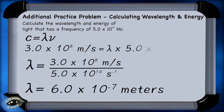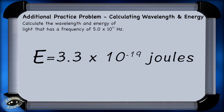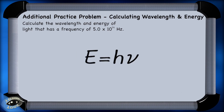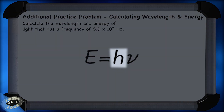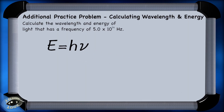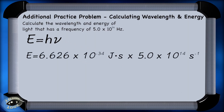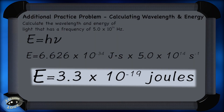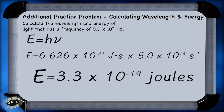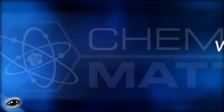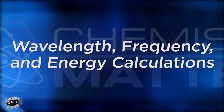For the energy calculation, the correct answer is 3.3 times 10 to the negative 19th joules. Remember that energy is directly proportional to frequency, so we take Planck's constant and multiply it times the frequency given in the problem. The unit waves per second is the same as hertz, and that's how we get our final answer of 3.3 times 10 to the negative 19th joules. That's a closer look at calculating wavelength, frequency, and energy.